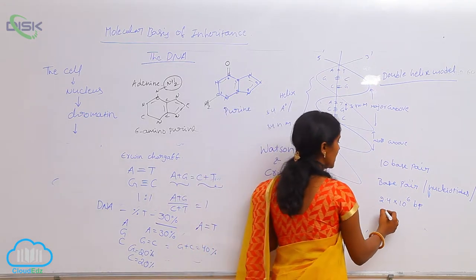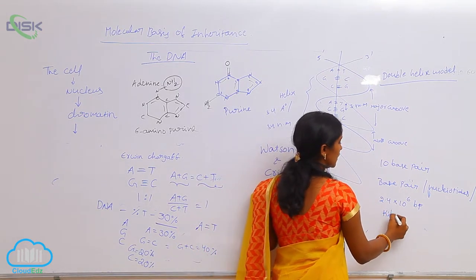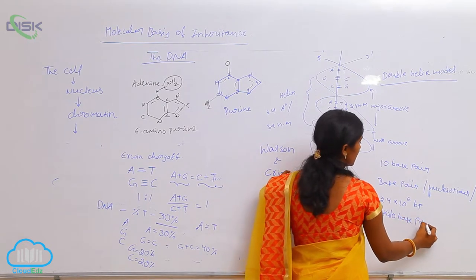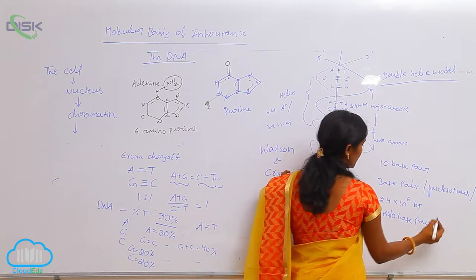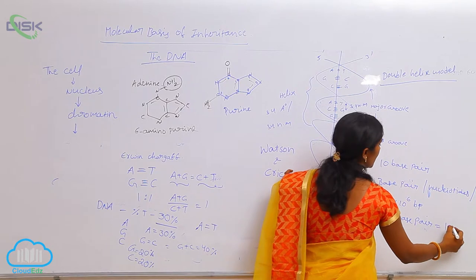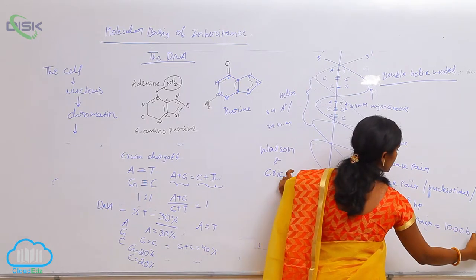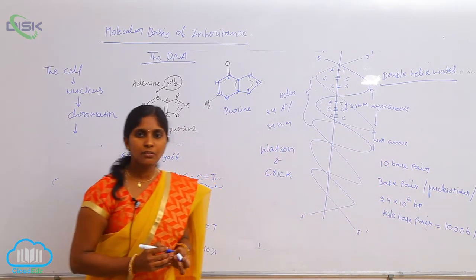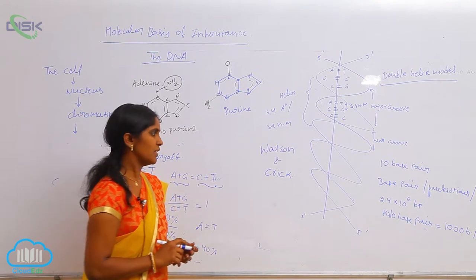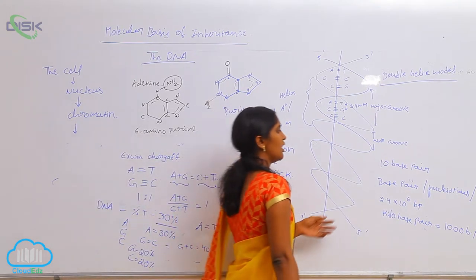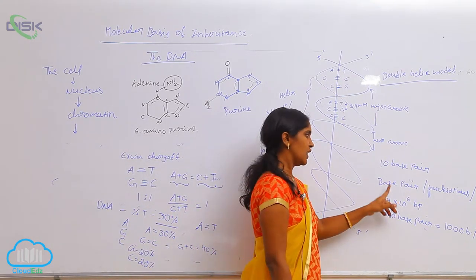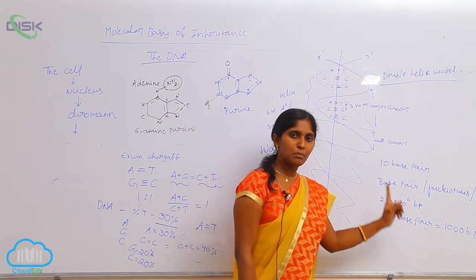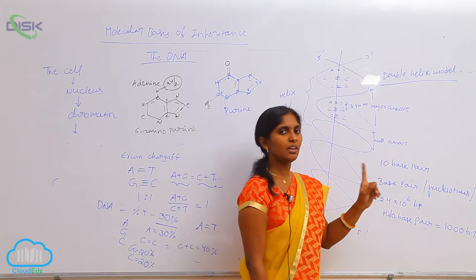Sometimes we express it in kilo base pairs. Kilo base pairs means 1000 base pairs. So we express the length of the DNA of a particular organism in the form of base pairs only — either bp or kbp.